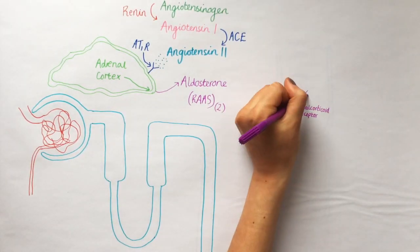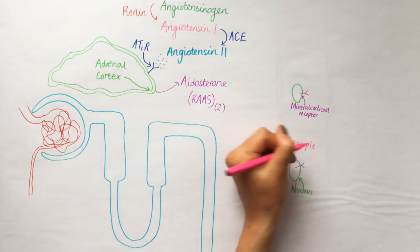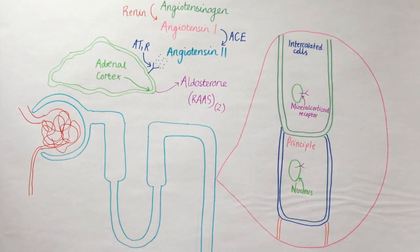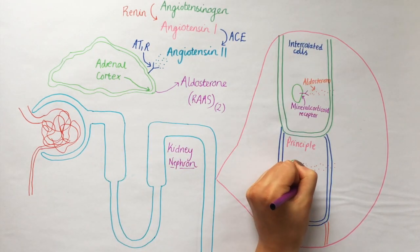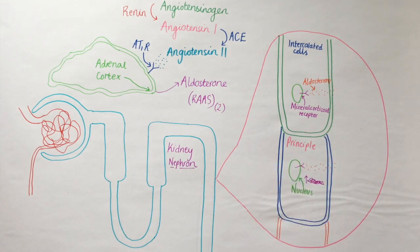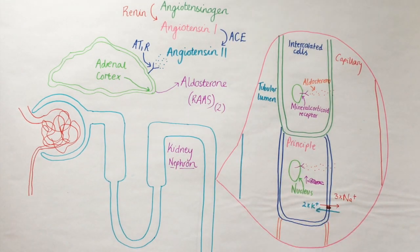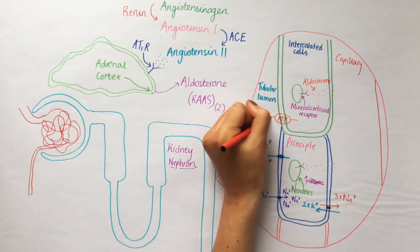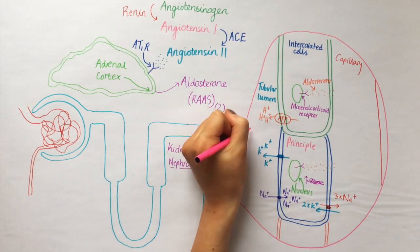Aldosterone binds to mineral corticoid receptors in the nucleus of principal and alpha-intercalated cells of kidney nephrons. It upregulates transcription of transporters that increase sodium reabsorption from the tubular lumen and potassium and proton excretion and loss into the urine.